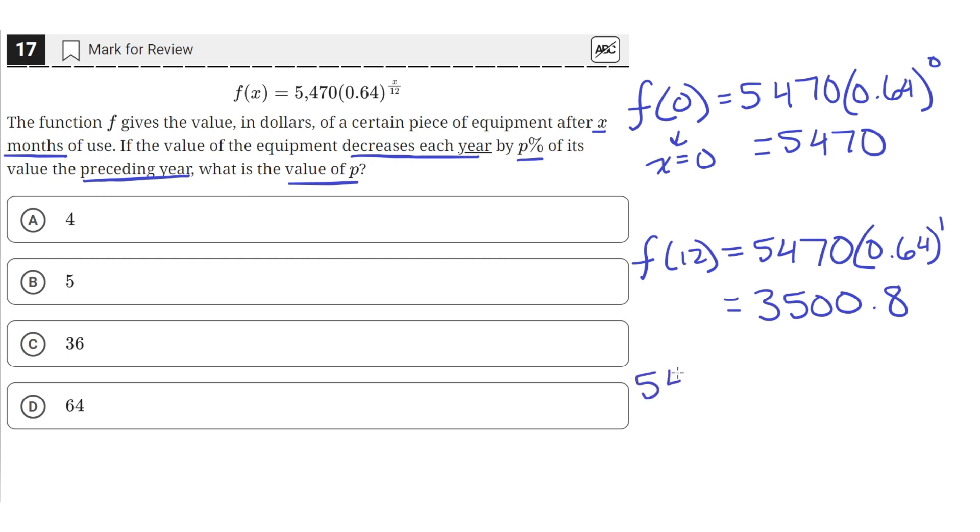So 5,470 minus 3,500.8. So that's the change. And then we need to divide that by the initial amount, 5,470, and multiply that by 100 to get the percentage change.